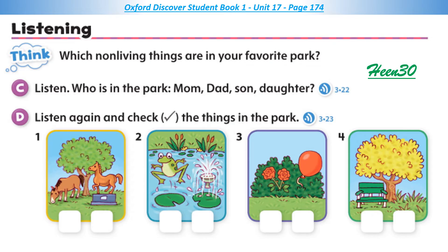One. This park is great, Dad. Look at that big horse! It isn't a horse, Joe — it's a statue. Oh yes, a very big statue. Two. There's a lovely pond over there. Let's go. Listen — what's that noise? Is it an animal? No, it's a fountain. Look. Oh, I love fountains. They're so cool.